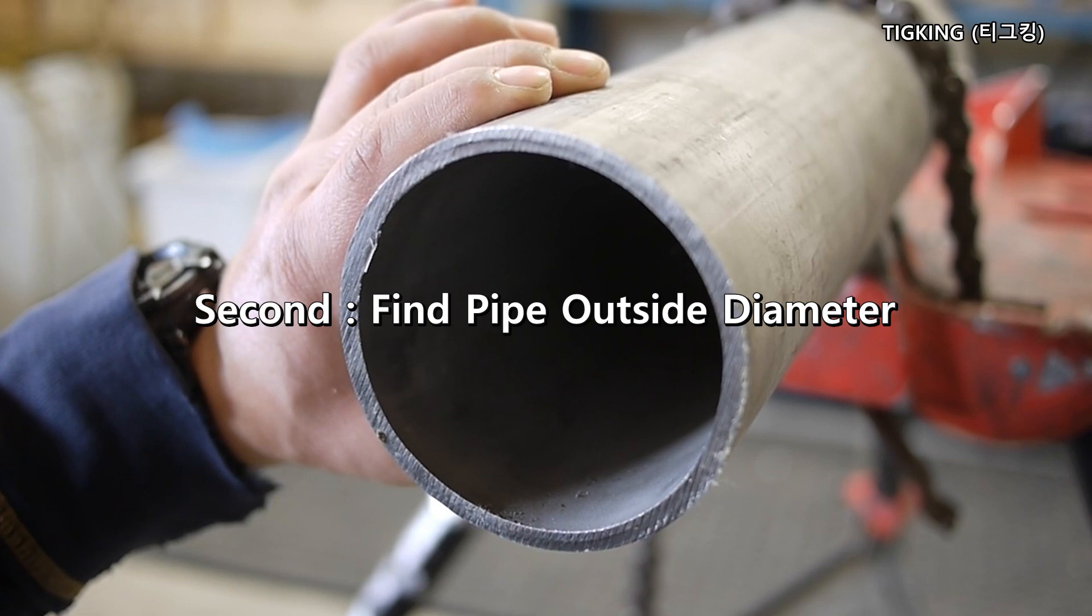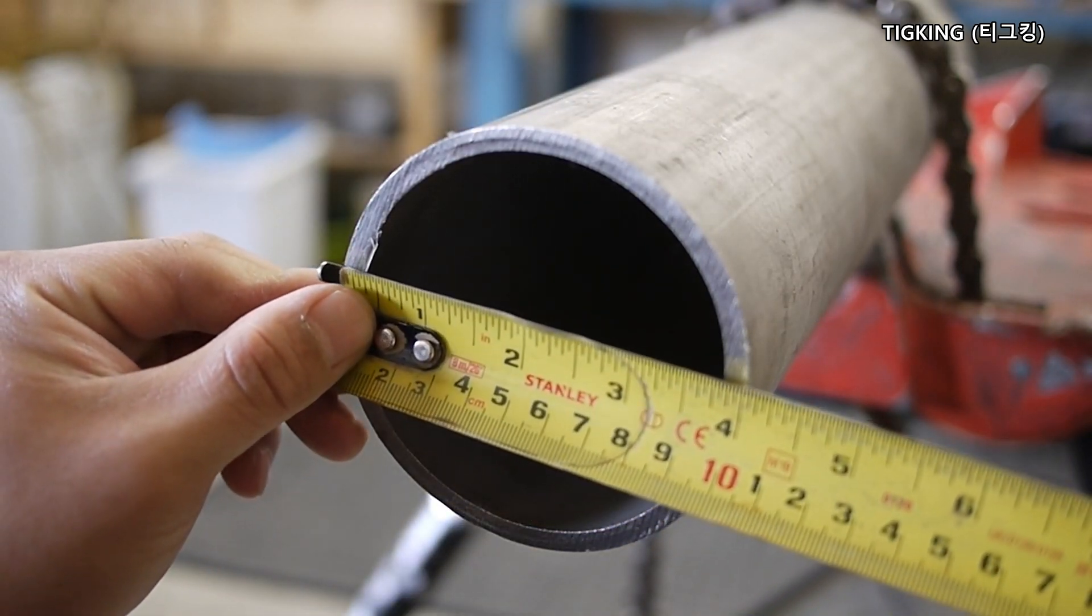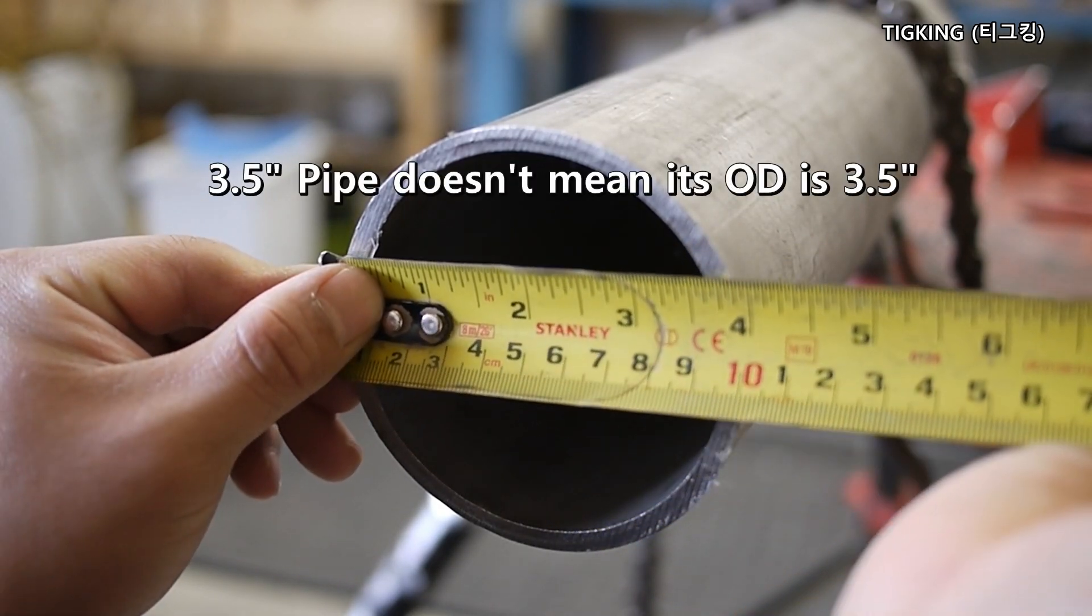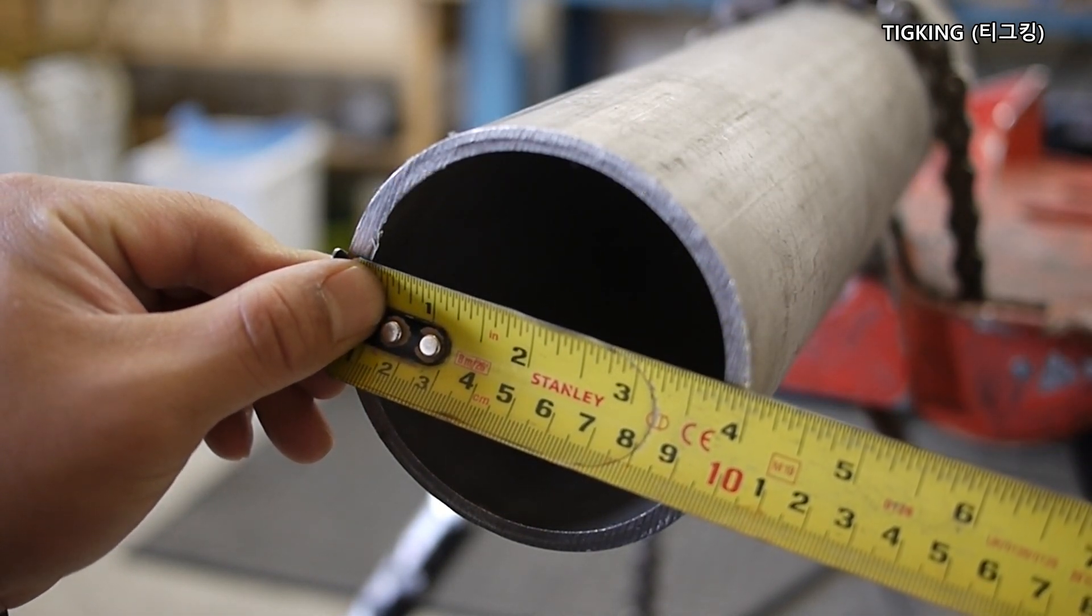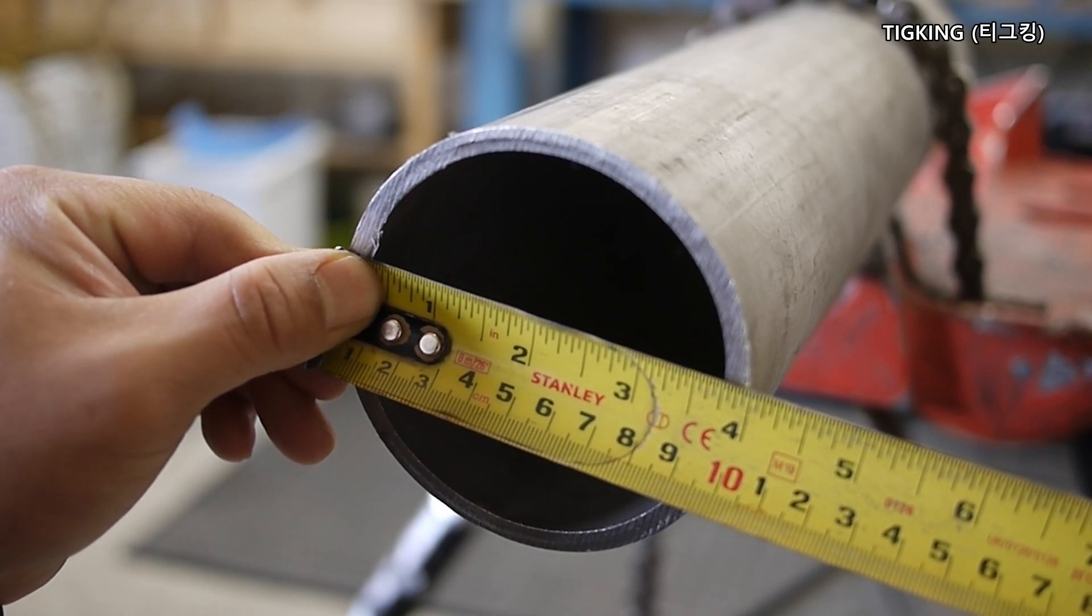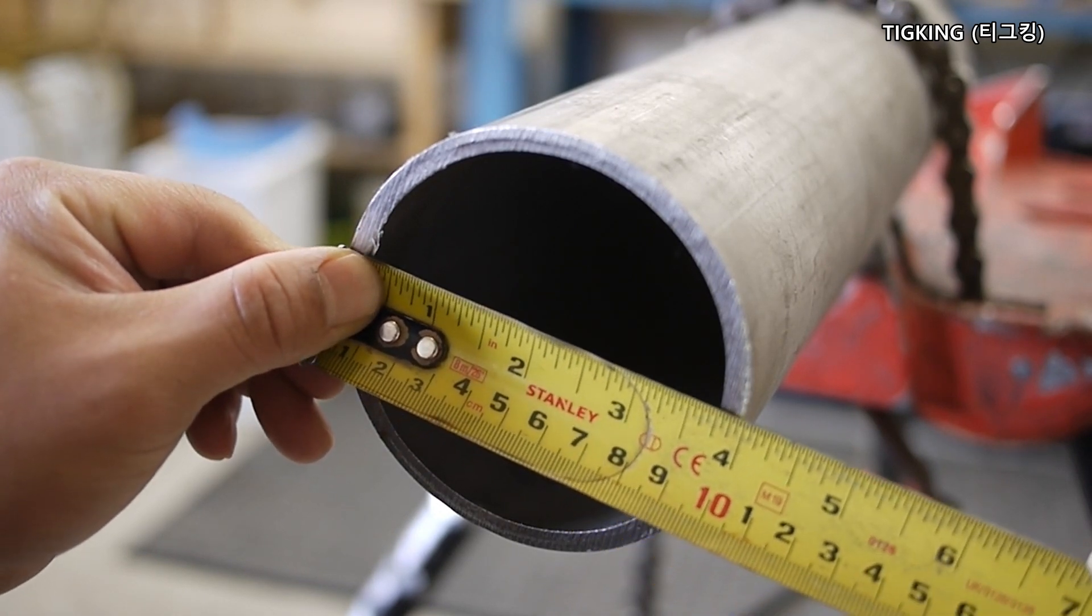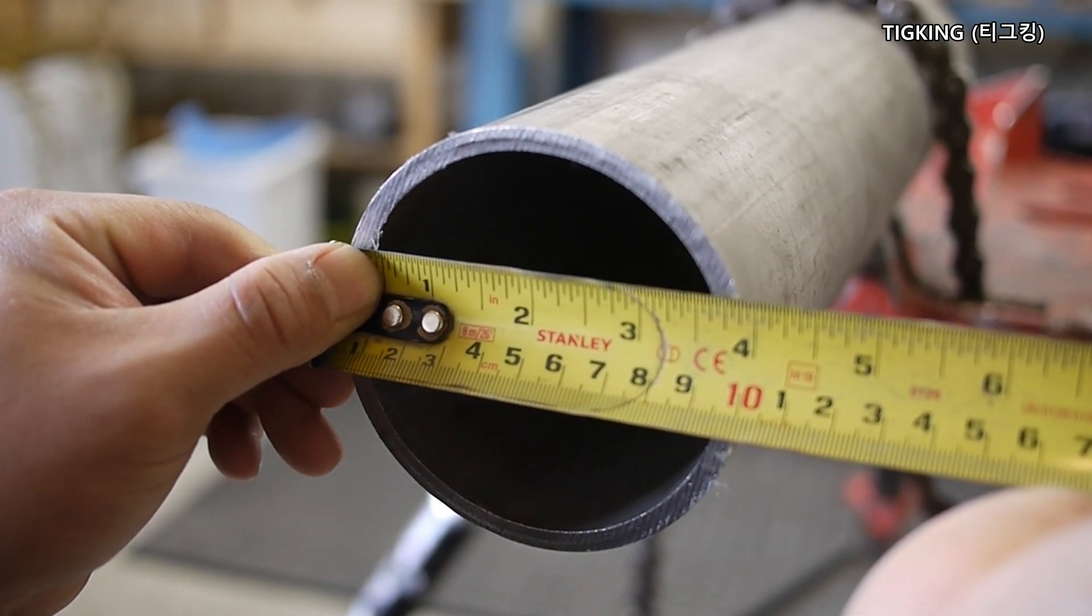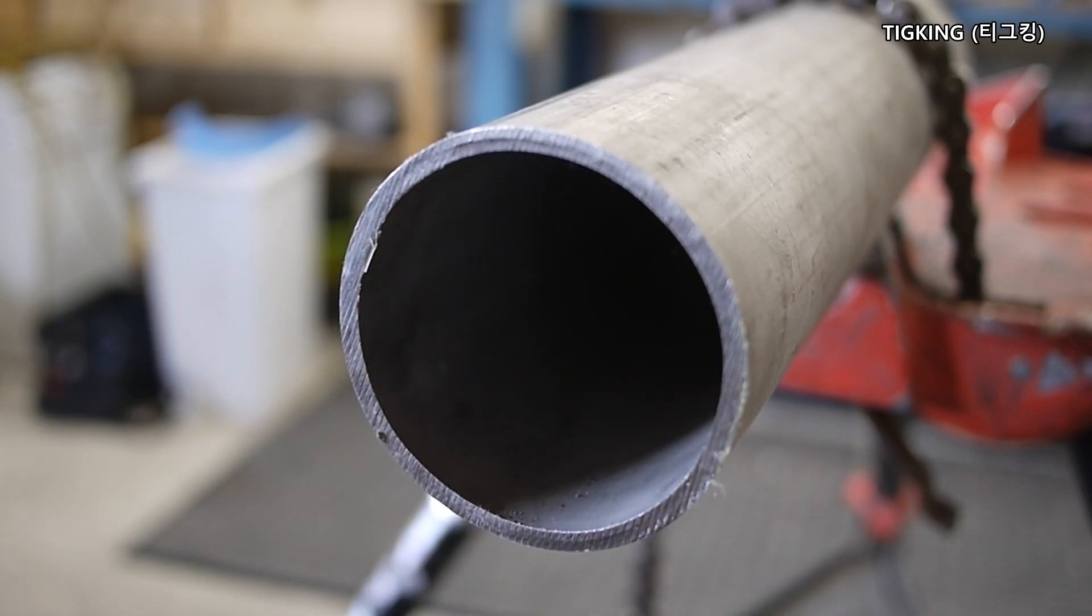Second, find pipe outside diameter. It is a three and a half inch size pipe. Three and a half doesn't mean its outside diameter is three and a half. You have to measure it to get a real pipe outside diameter. I use a tape measure and move up and down to read the longest measurement.